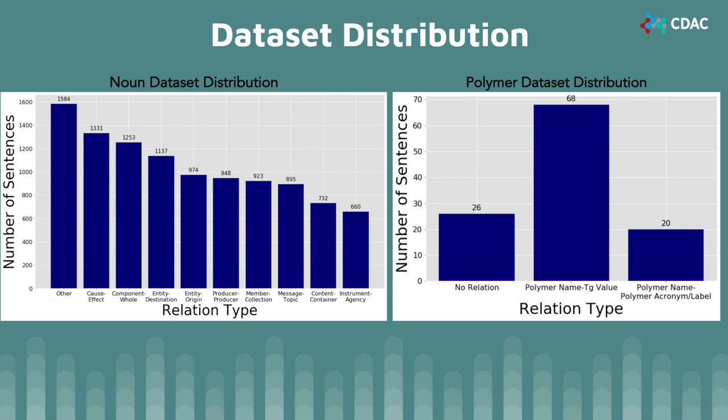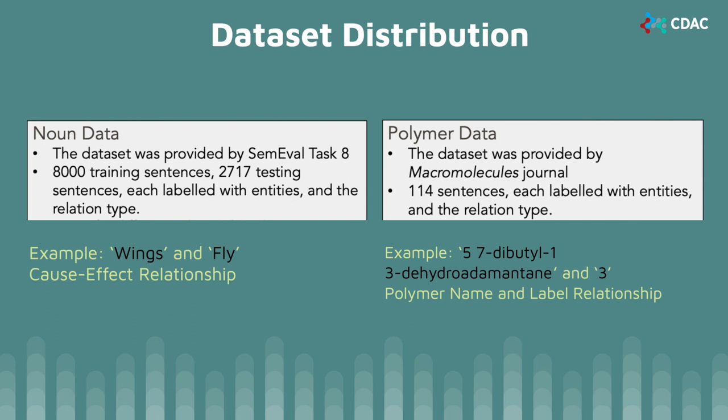In the noun dataset, we identified 10 different relationships that are possible between two different nouns in a sentence. One example of this relationship is cause and effect. In our polymer dataset, we focused on three different relationships between polymers. One such relationship could be identified as one word being the full name of the polymer, and another as the polymer's acronym or label.